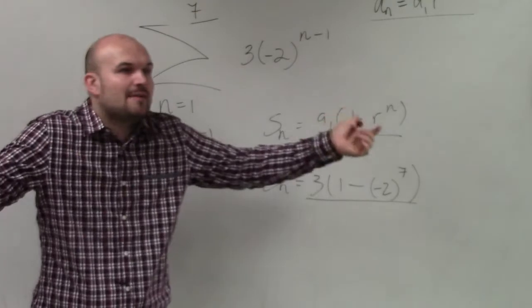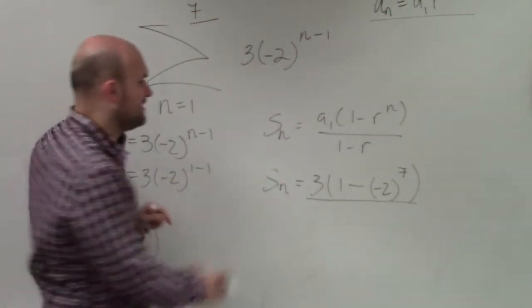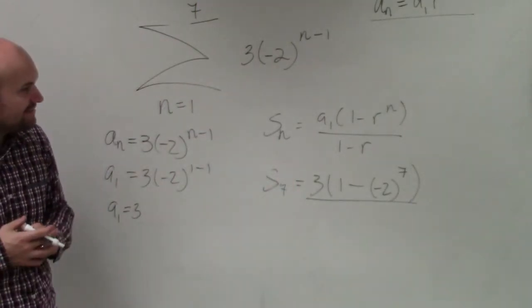Because we're trying to find the sum of how many numbers? Seven of them. That's what that represents. Because we're trying to find s of seven numbers, the series of seven terms.